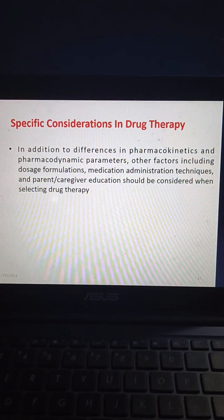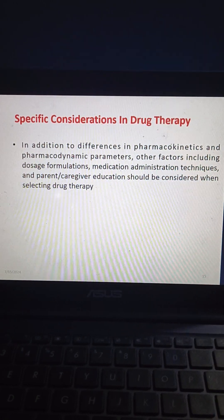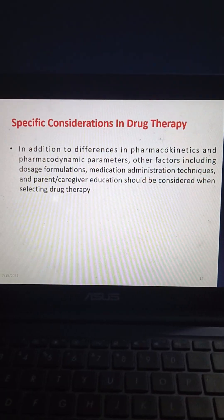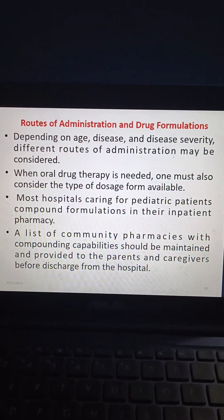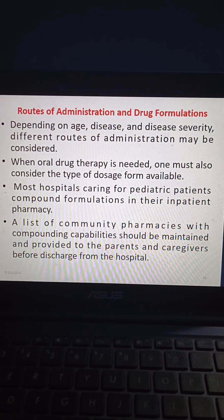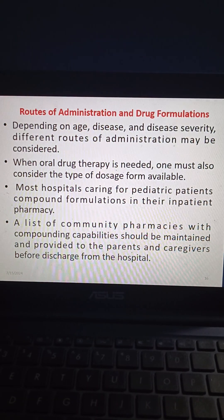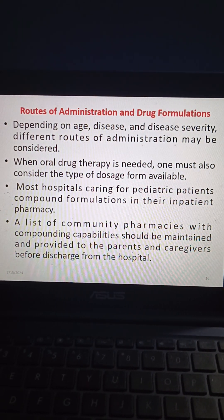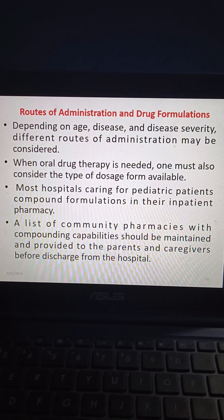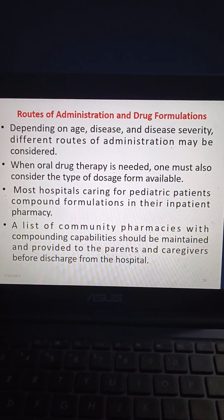Regarding specific considerations in drug therapy, in addition to differences in pharmacokinetic and pharmacodynamic parameters, other factors including dosage formulations, medication administration techniques, and parent/caregiver education should be considered when selecting drug therapy. Depending on age, disease, and disease severity, different routes of administration may be considered. When oral drug therapy is needed, one must consider the type of dosage form available. Most hospitals caring for pediatric patients compound formulations in their inpatient pharmacy, and a list of community pharmacies with compounding capabilities should be provided to parents and caregivers before hospital discharge.